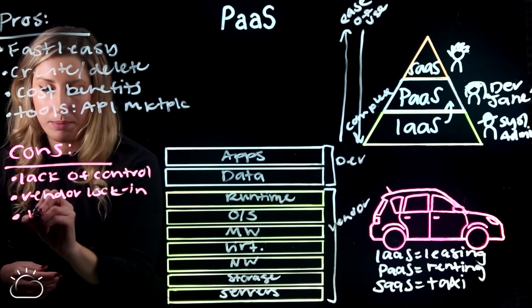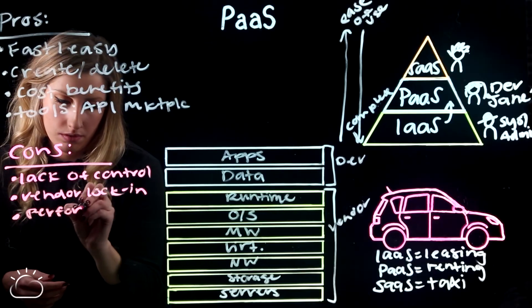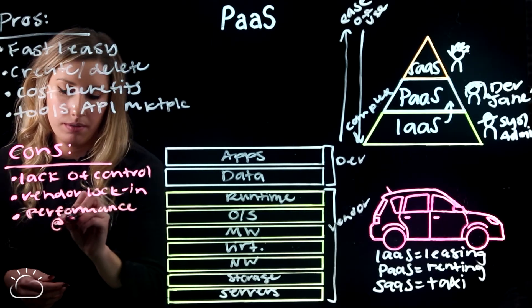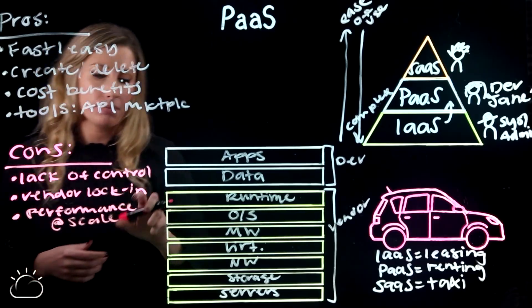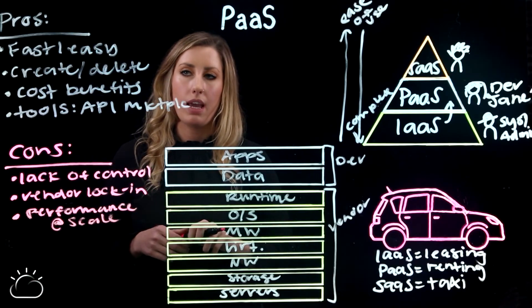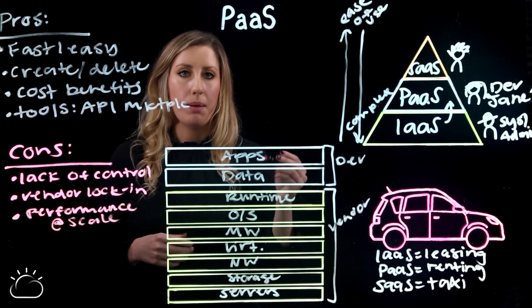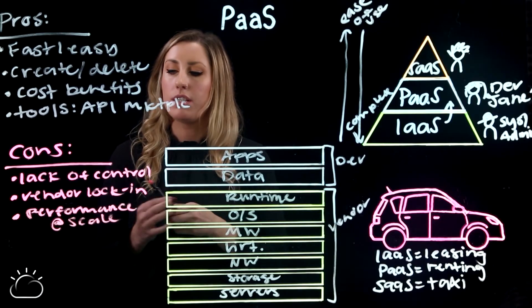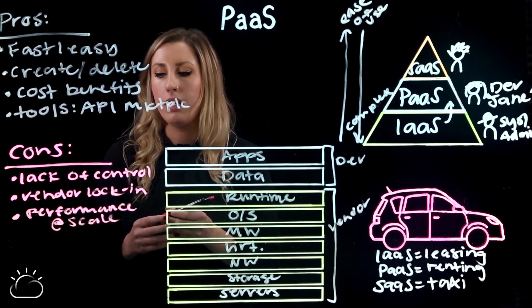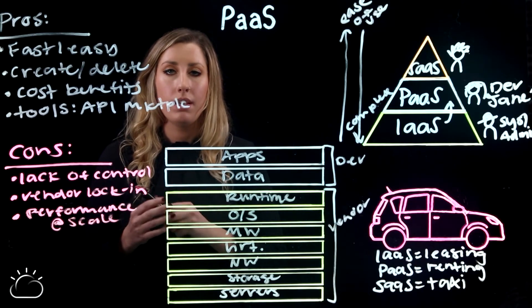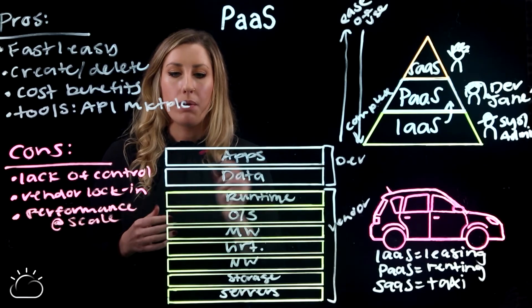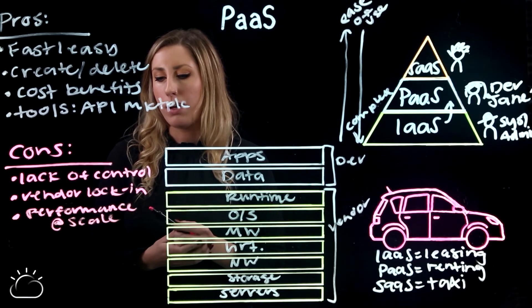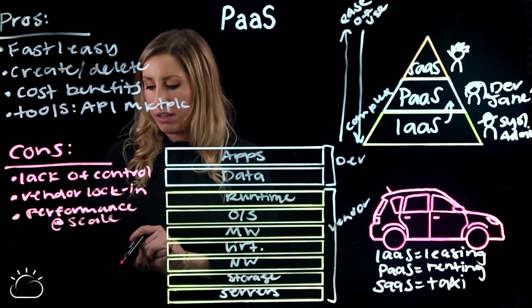And finally, performance at scale can be an issue. Say Jane the developer had a Platform as a Service proof-of-concept app from a conference, and then she released it to 10,000 people the next day — it definitely won't have the same performance as if it was running on a dedicated bare metal server, for example. So that's a consideration to have.